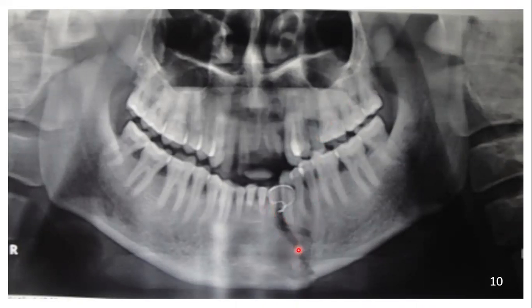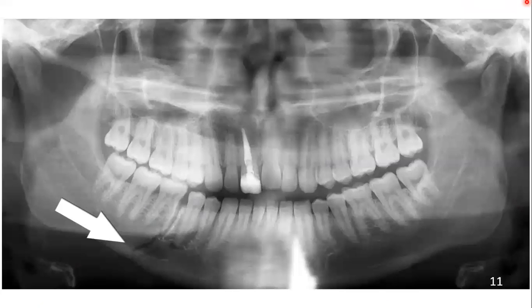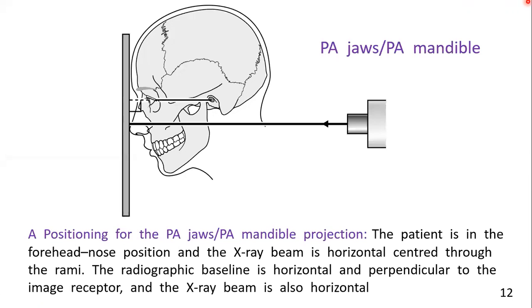Now a fracture in the parasymphysis area in OPG. Here again you can see a fracture in the body area — a complex or multiple-line fracture, indicating a segmental fracture.